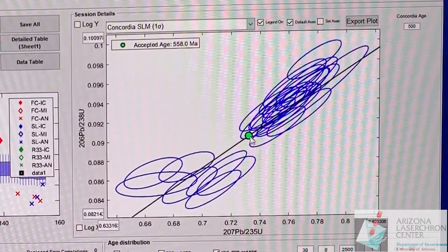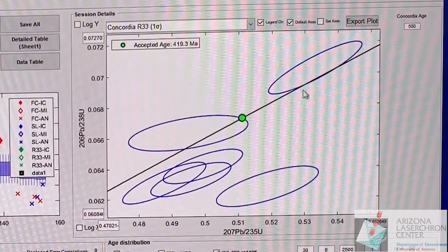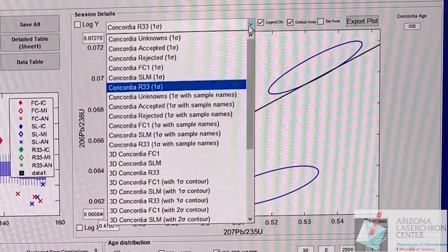For SL, these are looking a little weird. See the accepted age here is in this green dot. And R33 also looking a little strange. Let's do some adjustments to this.